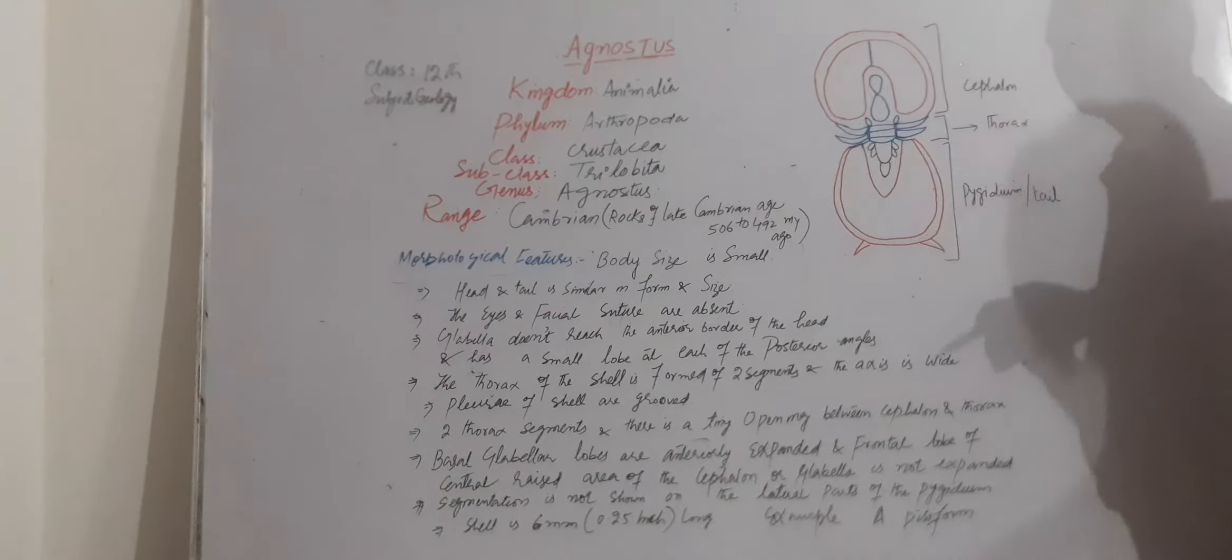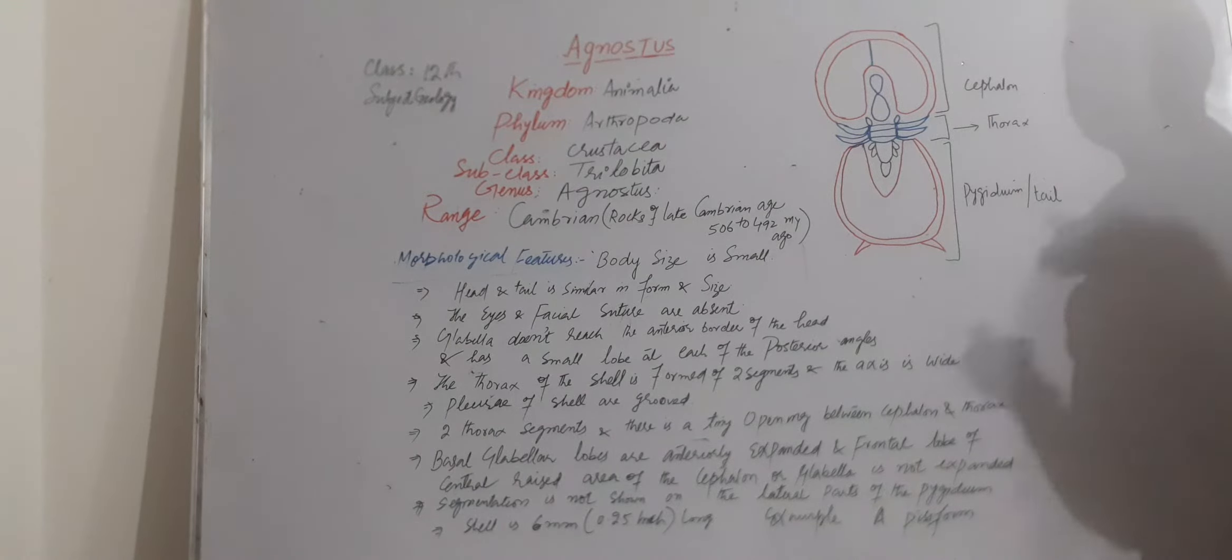Glabella, which we see in the other shells, but in this shell the glabella do not reach the anterior border of the head and has a small lobe at each of the posterior angles. So this shell has a small lobe at each of the posterior angles.